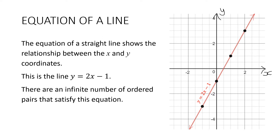You can see a couple of them here. This point here is negative 1, negative 3. If I substitute that into this equation, we're going to get the same thing on both sides — it's going to satisfy the equation.